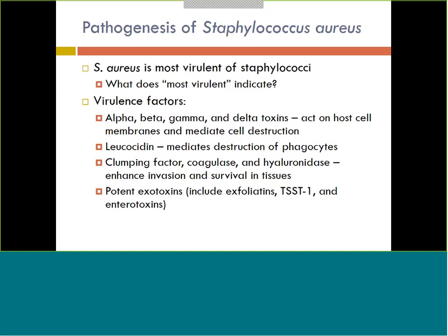Staph aureus is considered the most virulent of all the staphs — basically the best at causing disease. It has lots of virulence factors that help it cause that disease. It has different toxins — alpha, beta, gamma, and delta — that act on patient cells and help destroy them. It also has leukocidin, which helps destroy phagocytes when they try to come over and engulf the bacteria.